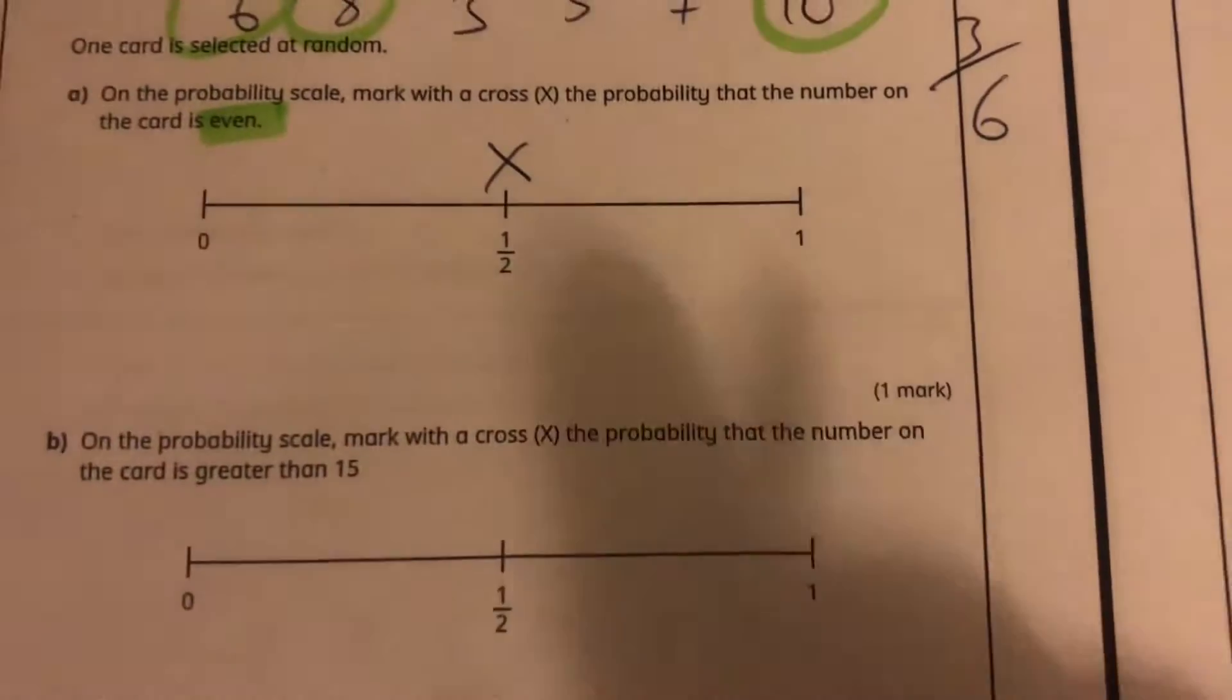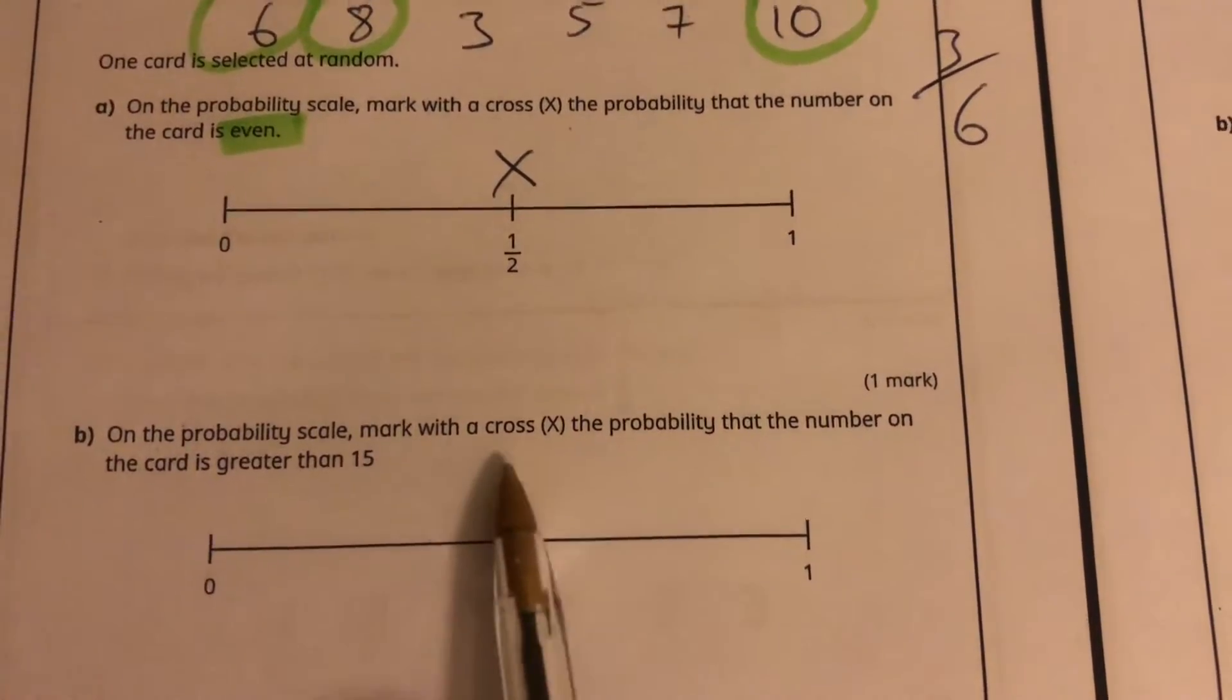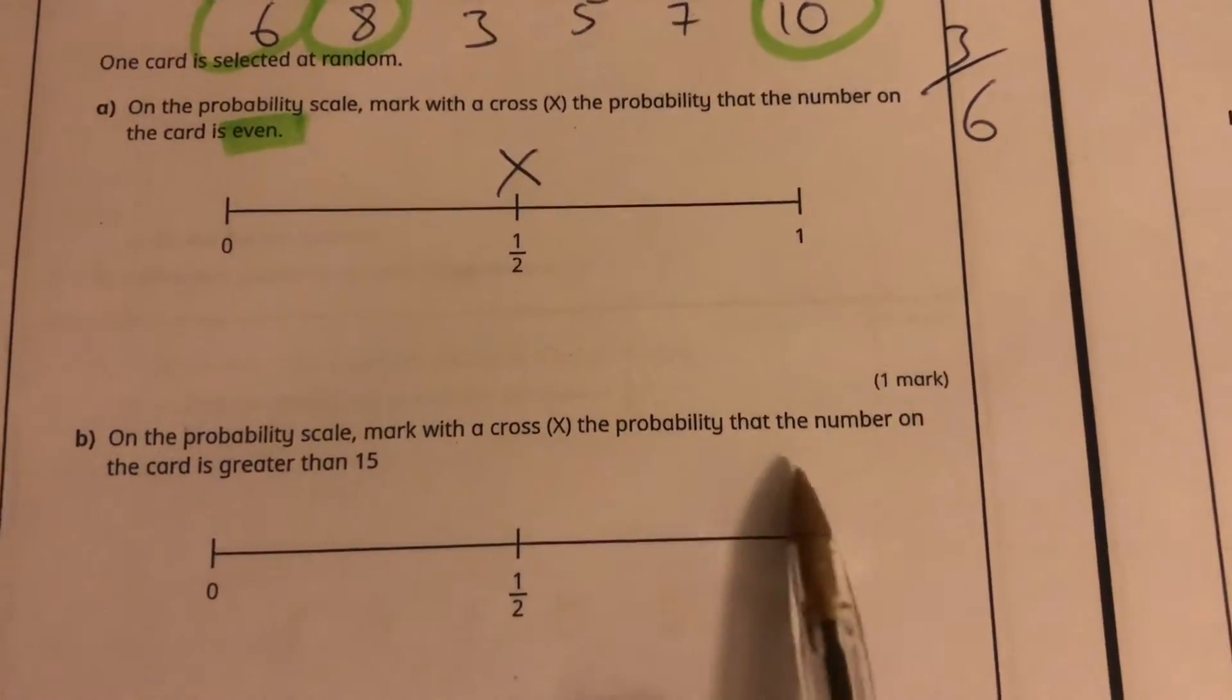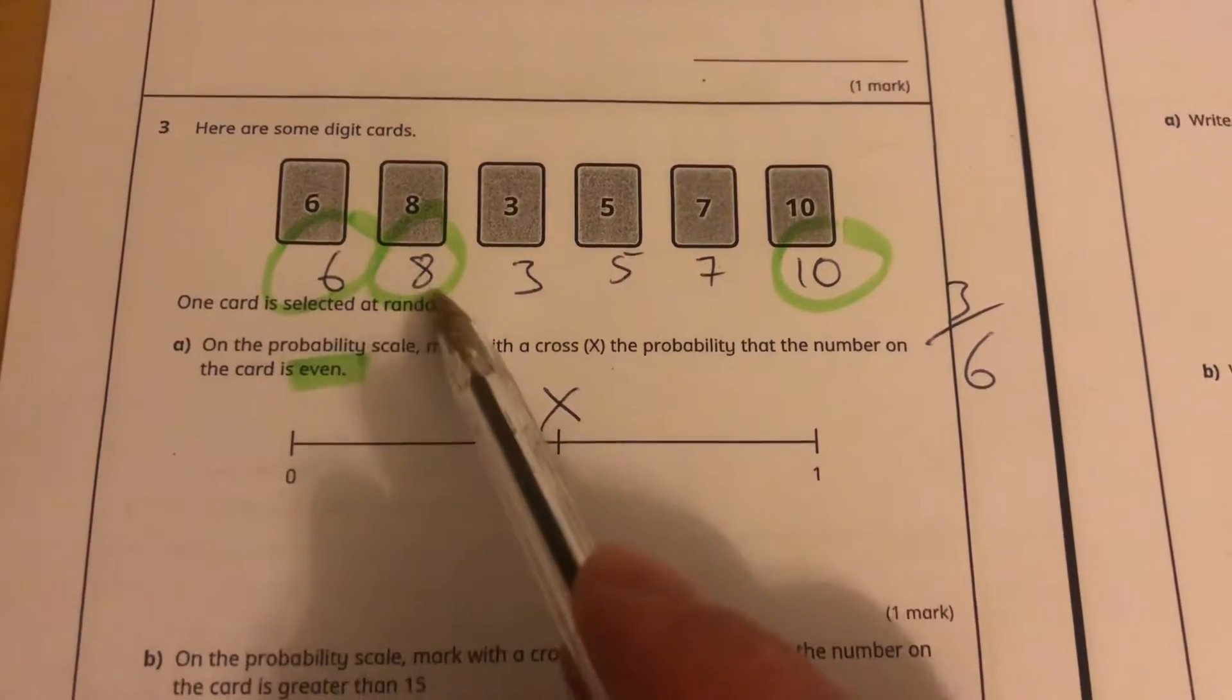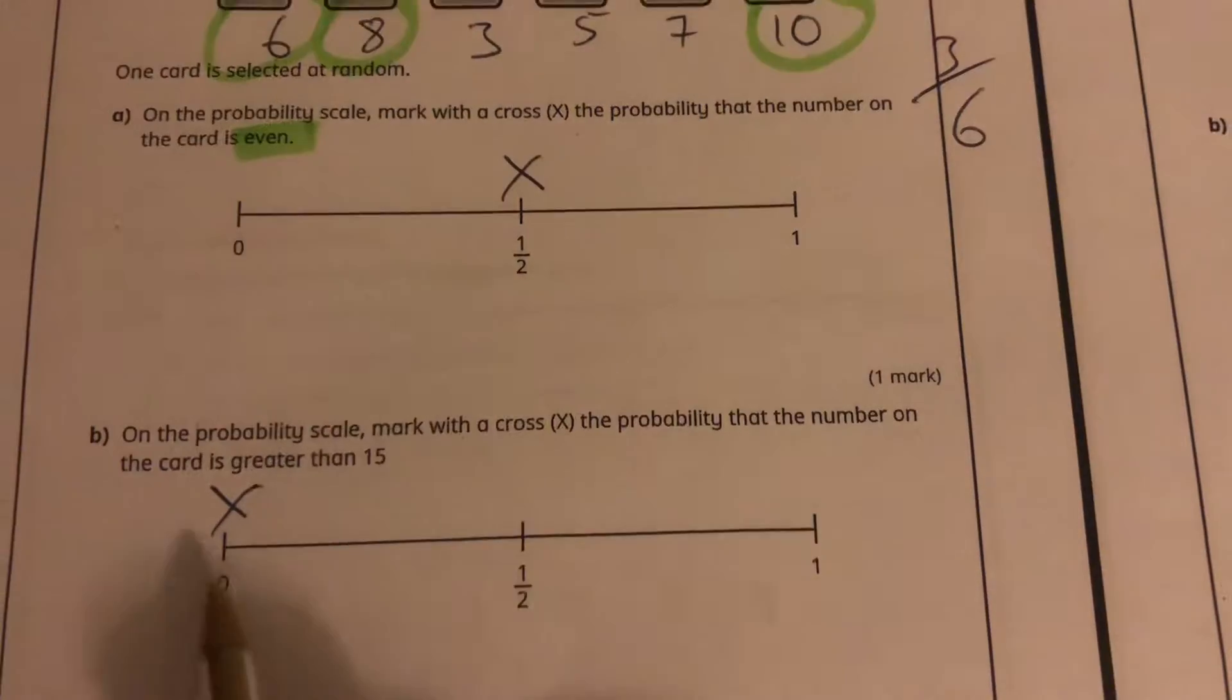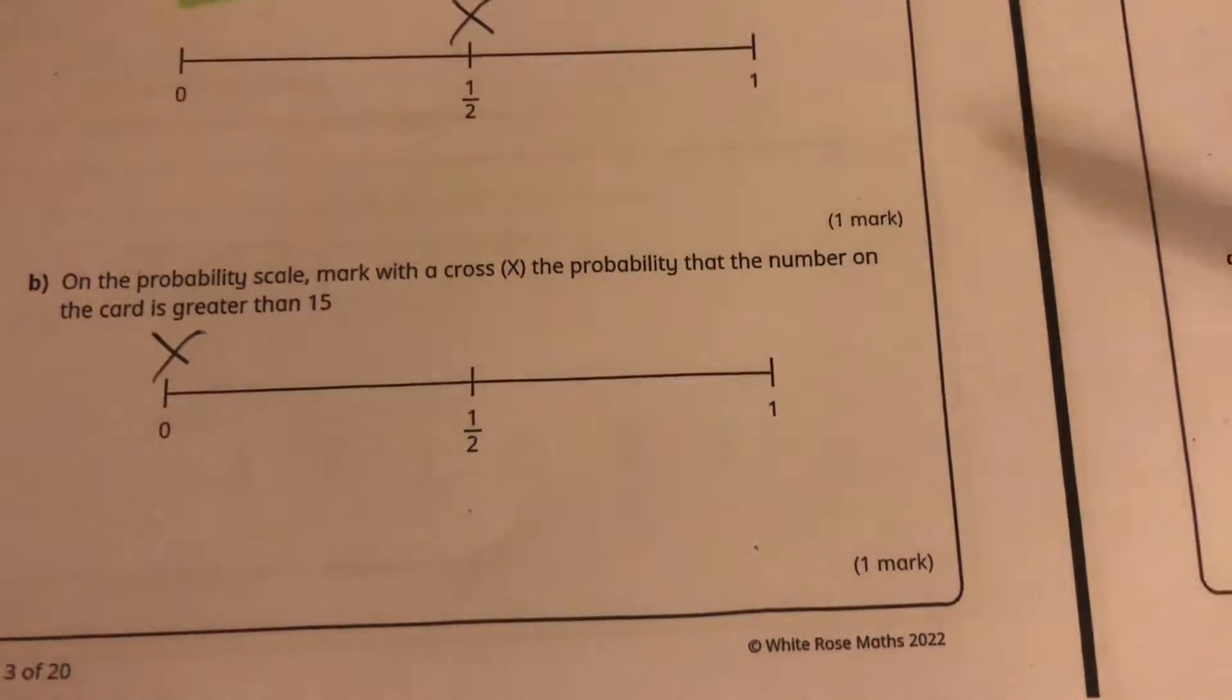So anything that's even - 6 is even, 8 is even, 10 is even. So I know that 3 out of 6 are even. 3 over 6 is the same as a half, so I put the cross there. One mark, just over a minute there. Mark the cross for the probability that the number on the card is greater than 15. There's no chance of getting something greater than 15. So we've got two marks in less than two minutes.